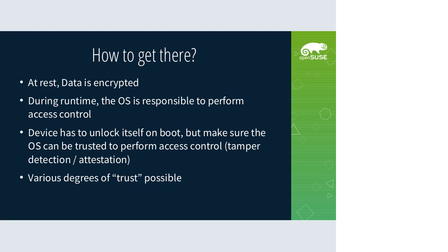This really has to make sure the OS is actually trusted and can perform access control — otherwise you could replace the OS with something that just gives you the decrypted data. This is called attestation: making sure the system during boot only performs decryption if the OS running on it meets a certain security guarantee. You can also do tamper detection so that if the system notices something changed — some setting, some device — it can refuse to boot. You can take this to various degrees of trust.